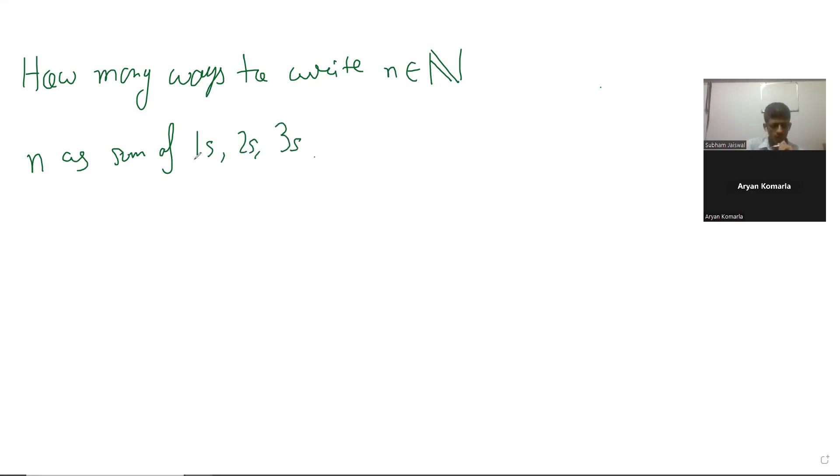When you say ones, twos, and threes, do you consider ordering? Yes, I've actually solved the question with this ordering consideration, so 1+1+2 is considered different from 2+1+1.